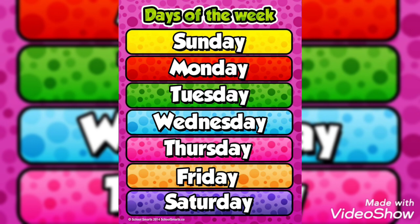We all know that there are 7 days in a week. Let's start counting — take out your fingers for counting. Sunday, then after Sunday comes Monday, Tuesday, Wednesday, Thursday, Friday and Saturday. Count how many fingers are out? They should be 7 in all. That means there are 7 days in a week.